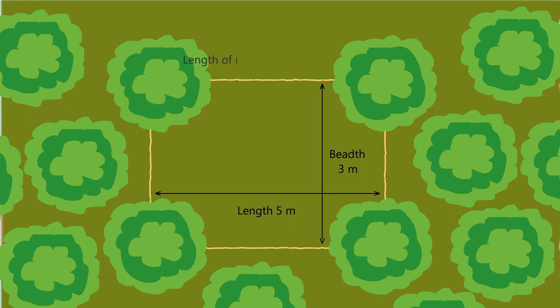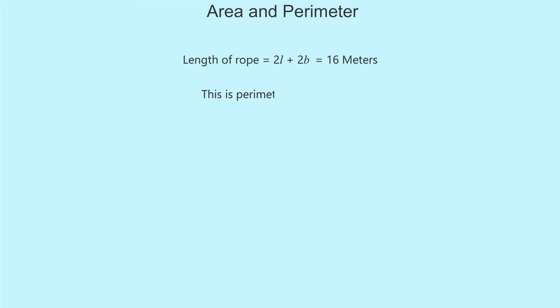As seen, it is 2L plus 2B. It comes to 16 meter. This quantity is called the perimeter of the rectangle.